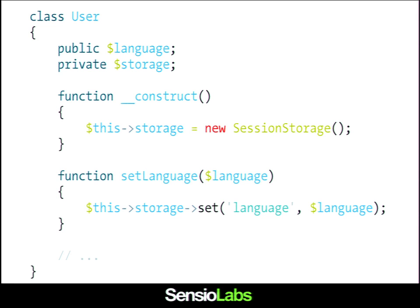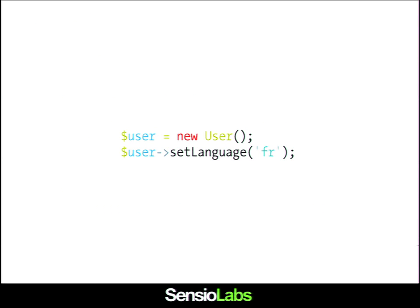Here is how I can use both objects in one convenient package. In the constructor of the user class, I create a session storage. Whenever I set the language, instead of storing it locally, I set it in the storage. From the user perspective, this is exactly the same as before — you create a new user, you set the language, and everything happens behind the scenes. You are not aware that this user object is actually using a session storage.